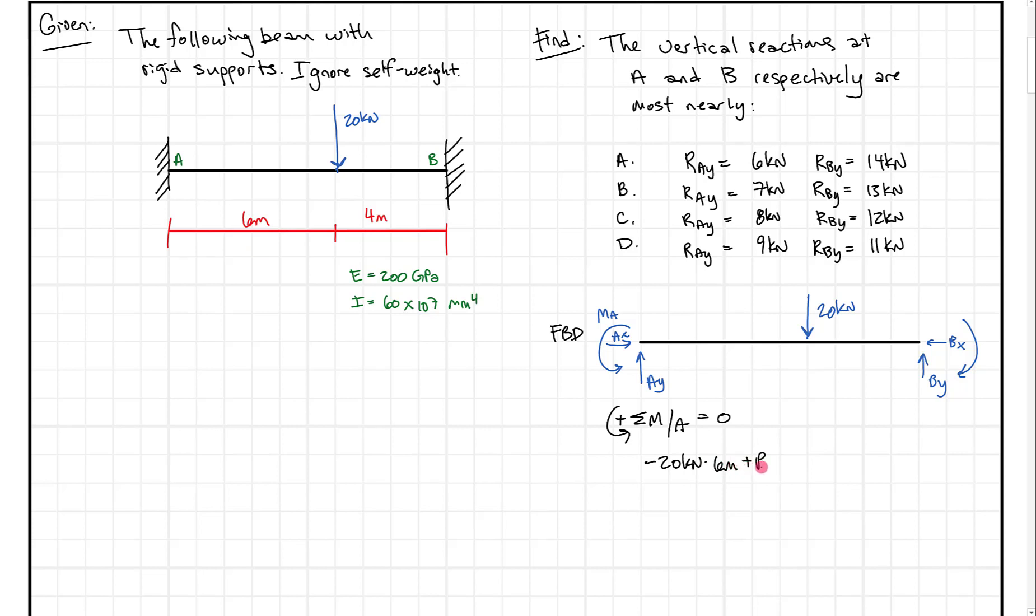But we're not done, because this moment at A and this moment at B both cause a moment about point A, so we have to include those in our equation. The moment at A follows the positive sign convention, so we add it. Moment at B goes the opposite direction, so we subtract it.